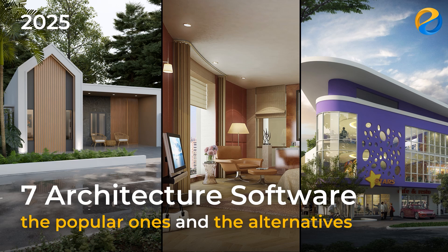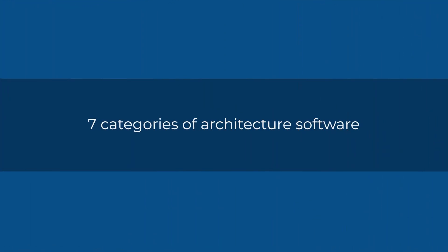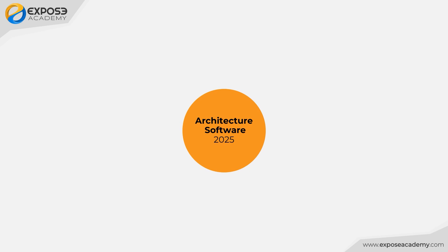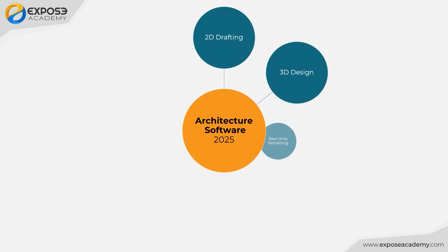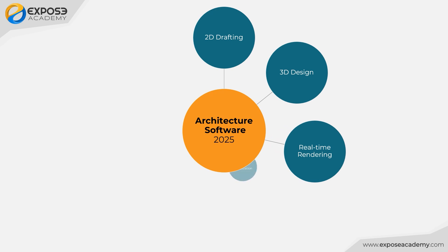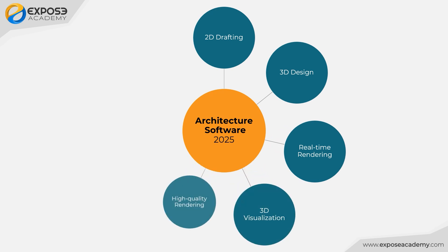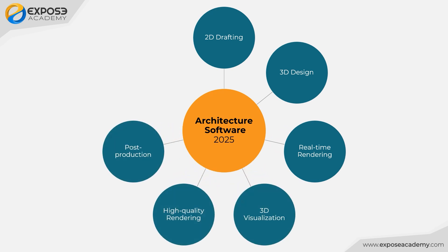Please note that I made this video in early 2025, so what I am about to explain here may only be relevant in 2025. Currently, the software used for architecture and interiors can be grouped into 7 categories. They are 2D drafting, 3D design, real-time rendering, 3D visualization, high-quality rendering, post-production, and the last one is BIM. Let's discuss each of these categories one by one.